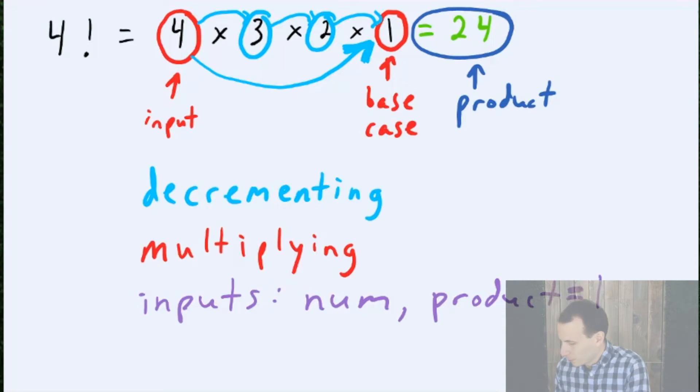And then, the way we change those, right underneath, I'll write how we change those, is the number is going to become num minus 1. These are sort of the new or updated inputs for the next recursive call. And then the product is probably going to be multiplied by the previous number, right?